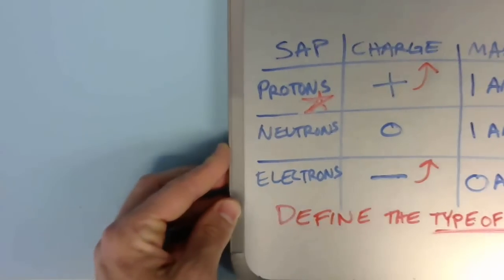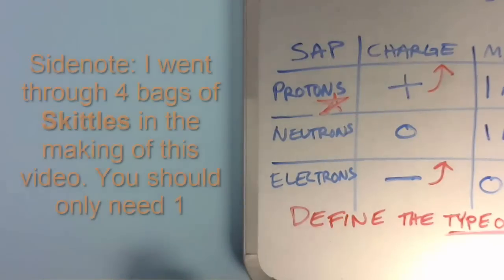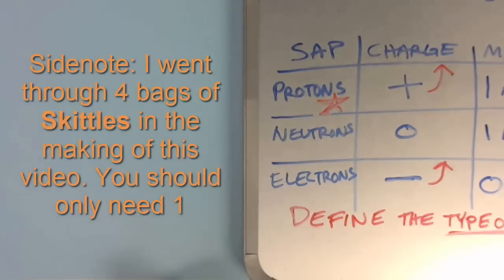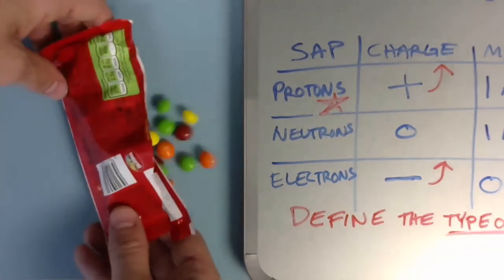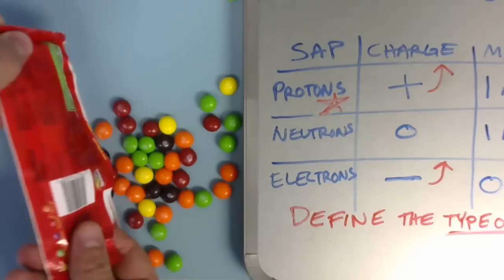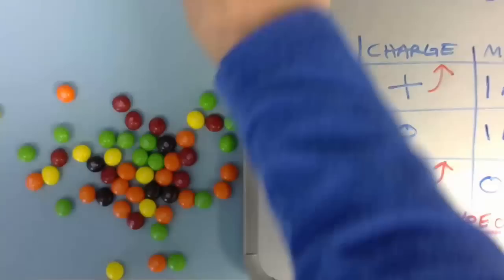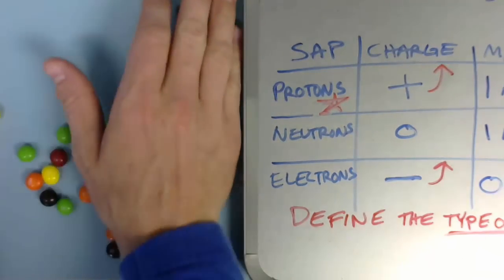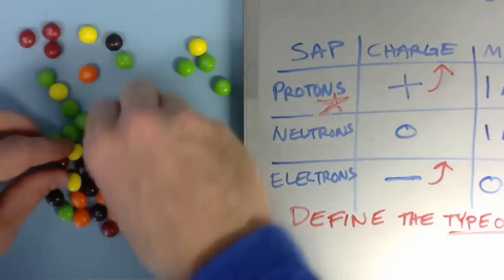All right, so now we are going to get into our orbital diagrams and our Skittles. Go ahead and open your bag of Skittles, and dump them all out.